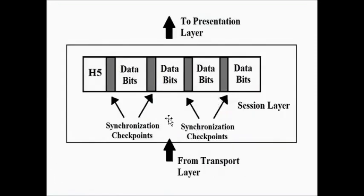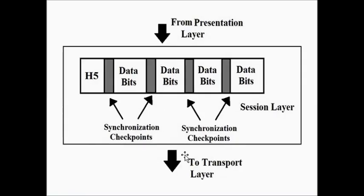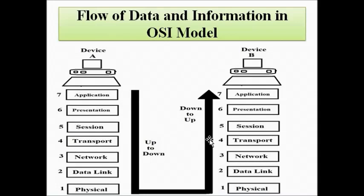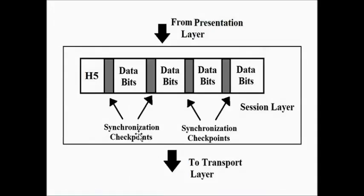This is the data packet of the session layer shown during bottom-to-top data flow, from receiver to sender. The data flow direction goes from sender to receiver in a top-to-bottom approach on the sender's side, and from receiver back in a bottom-to-top approach on the receiver's side — which is why the arrowheads are placed accordingly, pointing downwards on one side and upwards on the other.